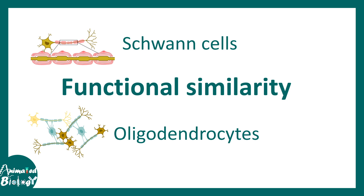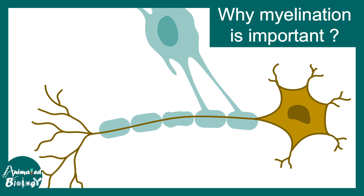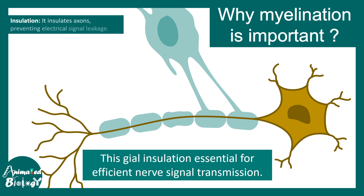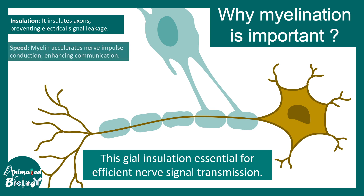Now let's discuss the broad functional similarity between Schwann cells and oligodendrocytes. Though they differ in origin and location, they share one basic common function: myelination. Myelination is important because both CNS and PNS neurons require insulation for nerve conduction, ensuring there is no electrical signal leakage during transmission.